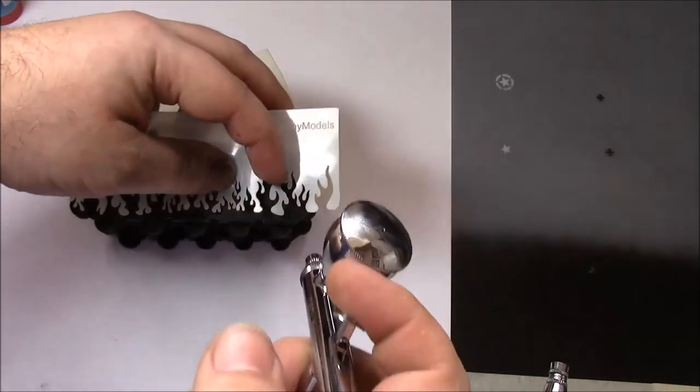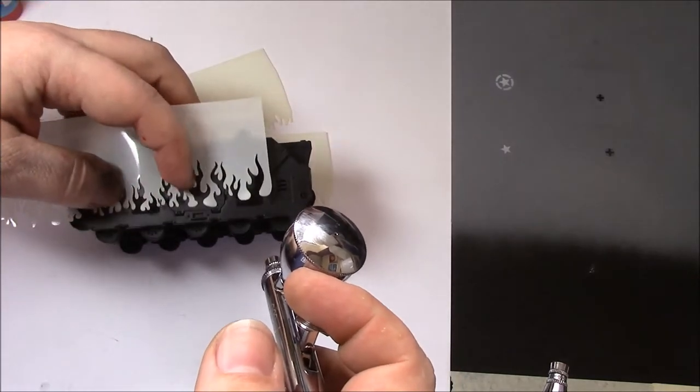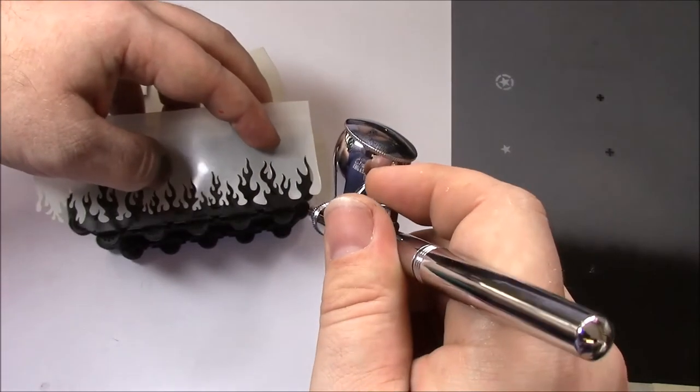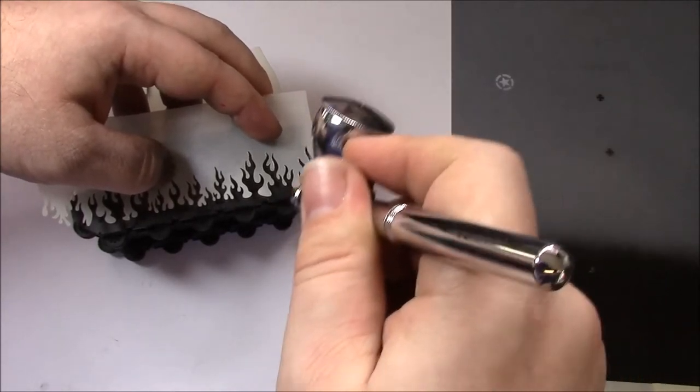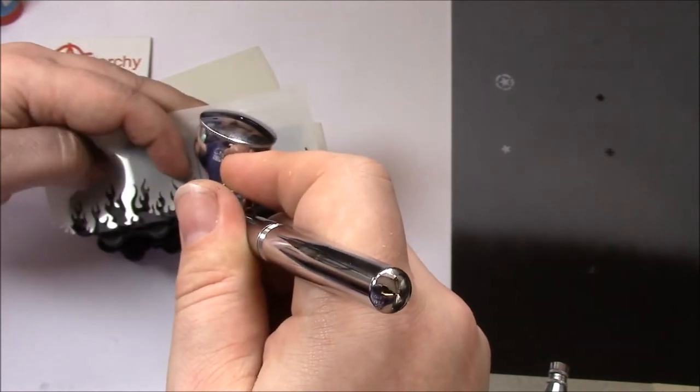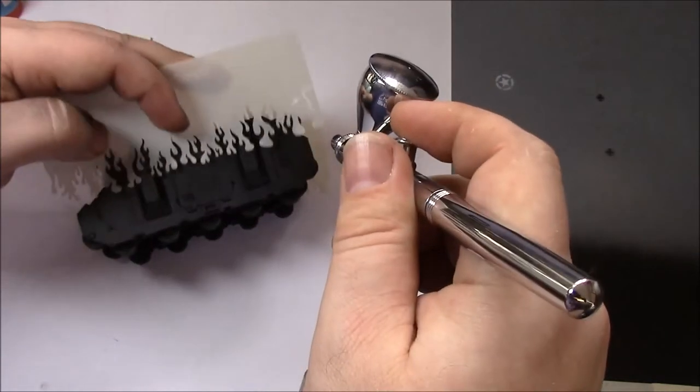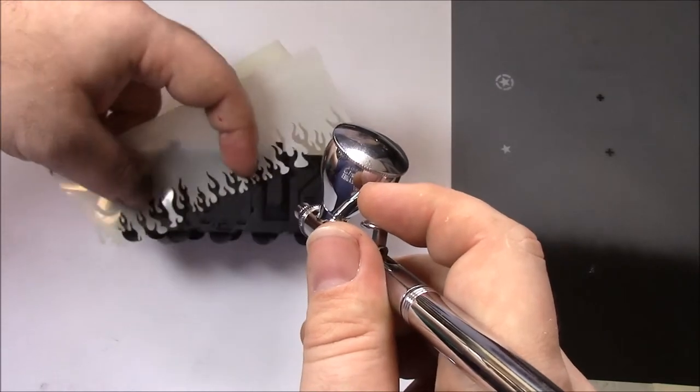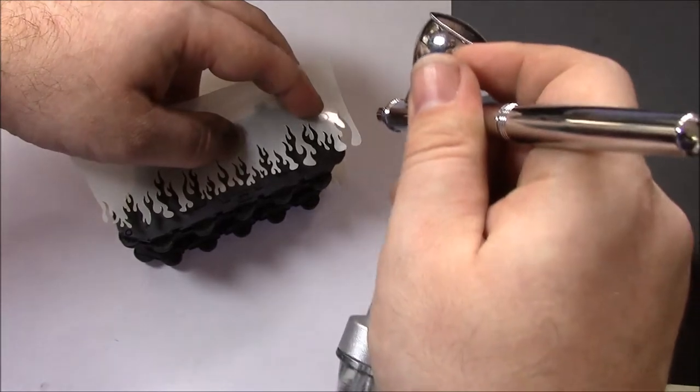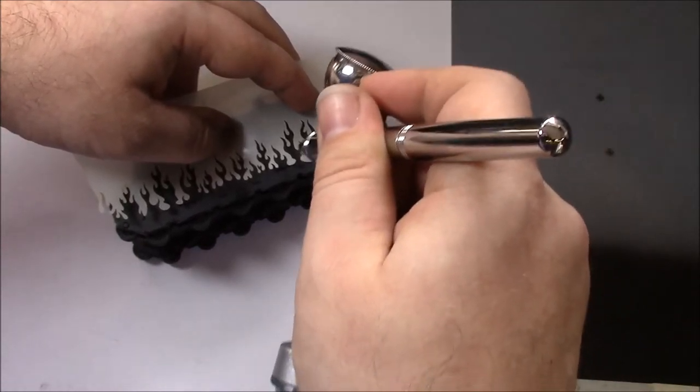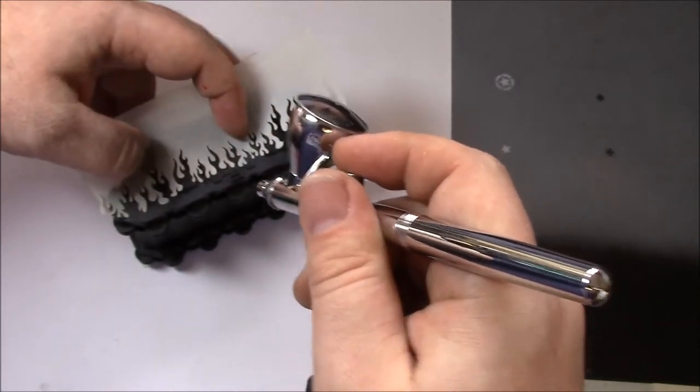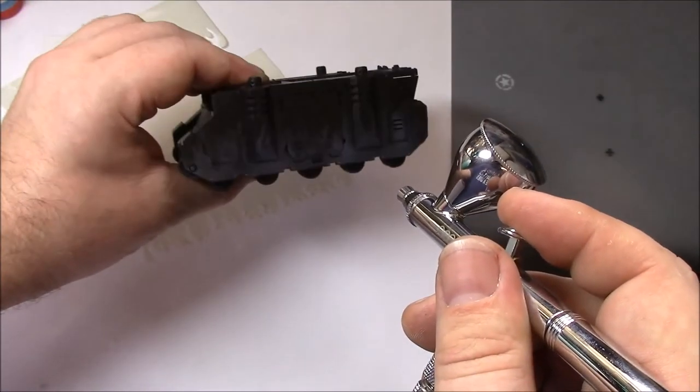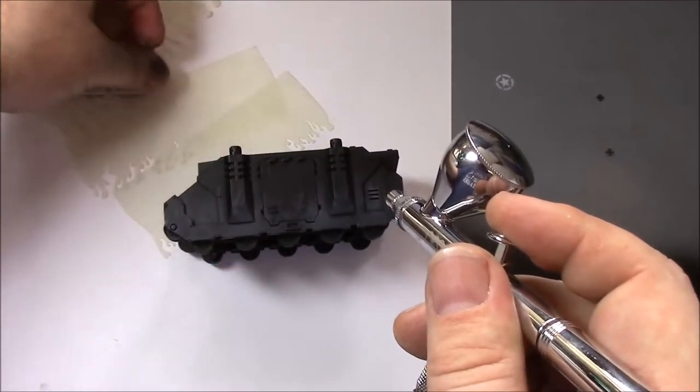We can have the flames go around the detail like so. To start off with, we're just going to build up a rough pattern to use as a guide. We're just going to lightly airbrush on, all the way along. Use a different one. This doesn't need to be particularly even. This is basically the backdrop for the actual flames we're going to be finished with.